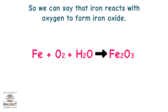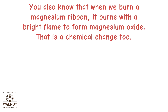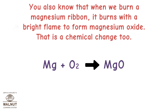The equation for iron rusting is: Fe + O₂ + H₂O → Fe₂O₃. You also know that when we burn a magnesium ribbon, it burns with a bright flame to form magnesium oxide — that is a chemical change too. The equation is: Mg + O₂ → MgO.